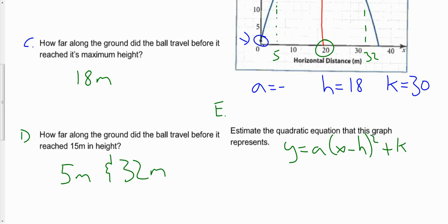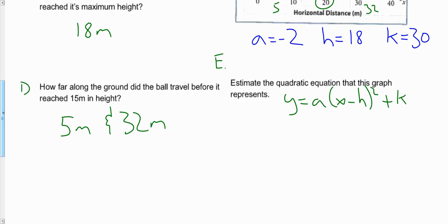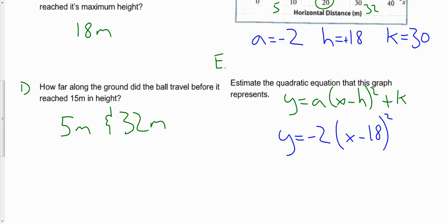We're going to try and estimate the A value and without doing a fancy calculation, we'll say it's negative 2. Based on these rough estimates of A, H, and K, we can plug those into the vertex form formula. So the equation is approximately y equals negative 2 times (x minus 18) squared plus 30. We say minus 18 because the H value is positive 18, and in the formula it's always the opposite sign. That's our rough estimate for the equation of the above parabola.